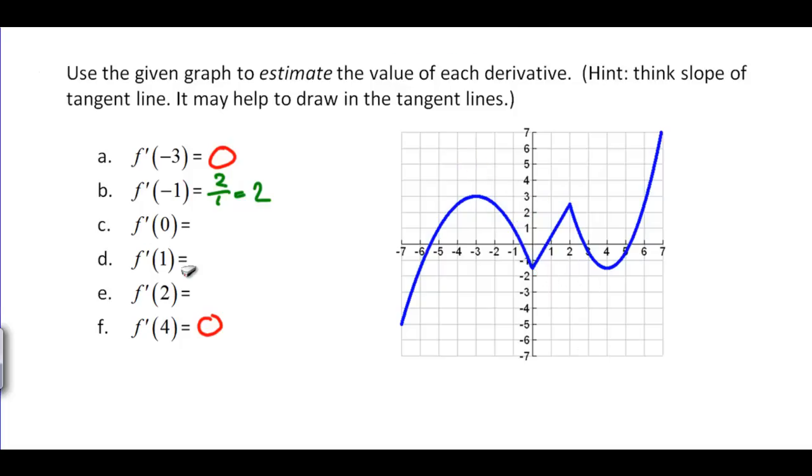Now if we look at f prime at 0, here is a very interesting thing. Because if I put a point here where x is 0 and I pick any point over here on the right side to estimate the tangent line it would look like this. But if I pick any point over here on the left side to estimate the tangent line it's going to look something like this. And as you can see those slopes are going to disagree.